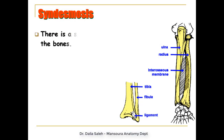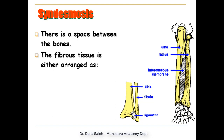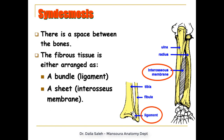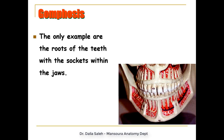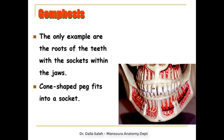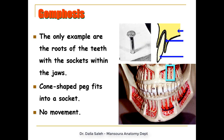In syndesmosis, there is a space between the bones filled with fibrous tissue, arranged either as a bundle or ligament, or as a sheet-like membrane called the interosseous membrane — 'inter' meaning between and 'osseous' meaning bones. Slight movement can occur between these bones. In gomphosis, the only examples in our body are the roots of the teeth within the sockets of the jaw bones — either the upper or lower jaw. It is in the form of a cone-shaped peg fitting into a socket, and no movement takes place at this type of joint.